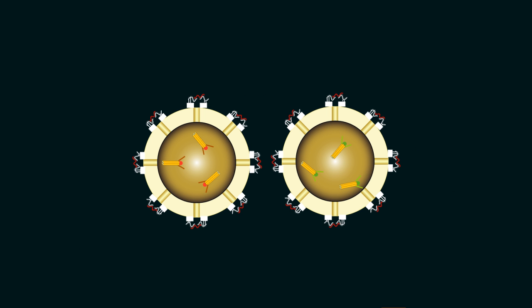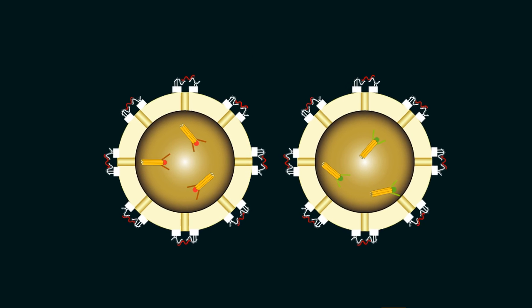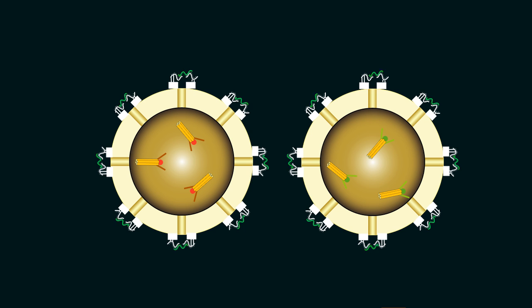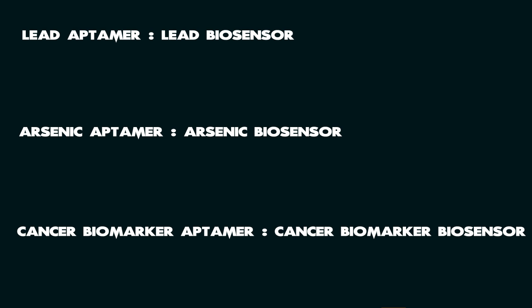However, had the target molecules not been present in the sample, the gates would not have opened and we would have seen yellow fluorescence since the dyes would have been farther apart. Since the target of the biosensor depends only upon the type of aptamer, changing the aptamer can change the target of the biosensor. Thus, we can make different biosensors for different target molecules for a wide variety of applications using the same universal design.